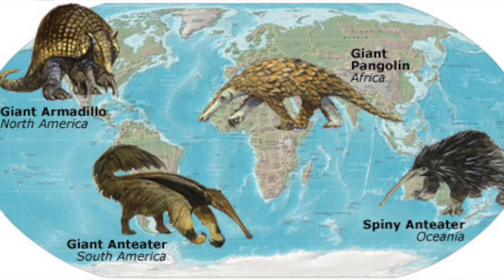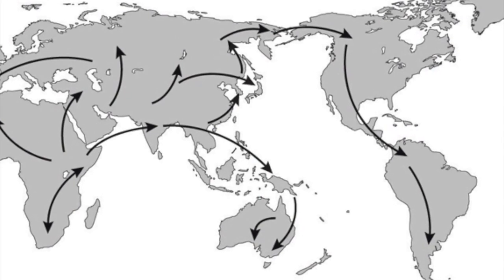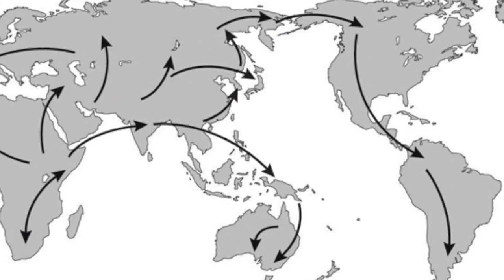The last zone is the Australian, which includes Australia, New Zealand, Oceania — the Pacific Islands — and Tasmania. Examples of species found here are the birds of paradise, tree frogs, and Tarturas.